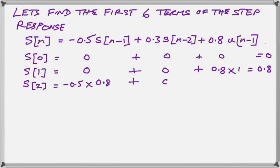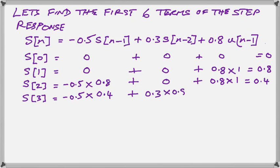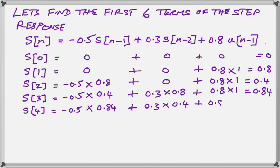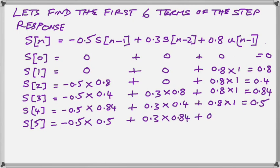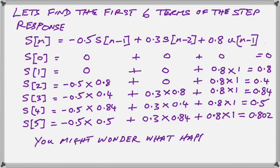So here we have listed the math that's required to find the values of our step response from n=0 to n=5. And we see that the preparation of our table and the way we use our table is identical to how we use the difference equation to transmute the X values into the Y values.